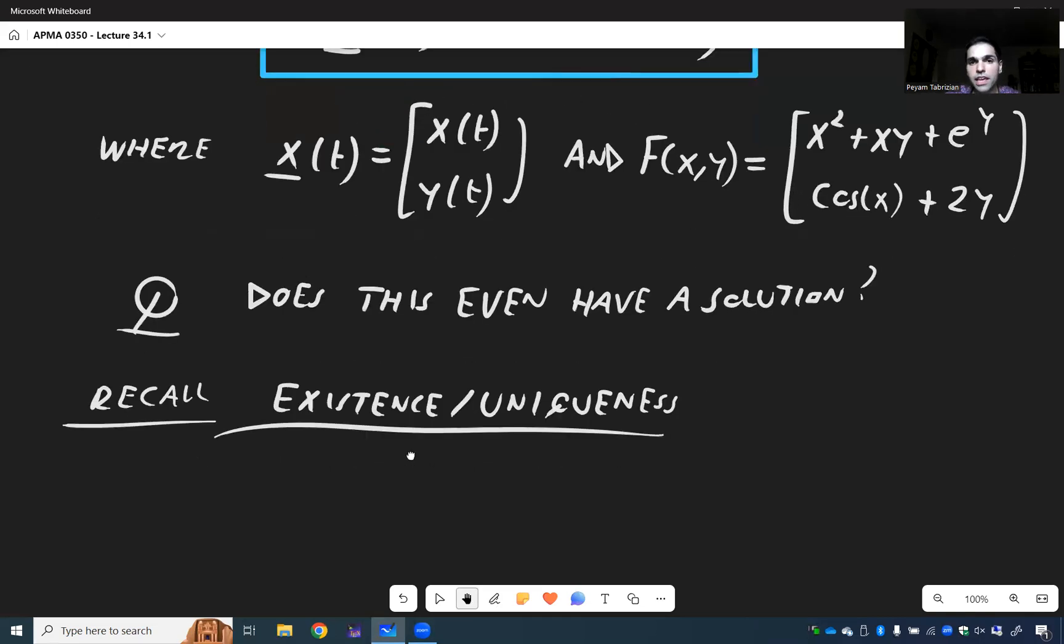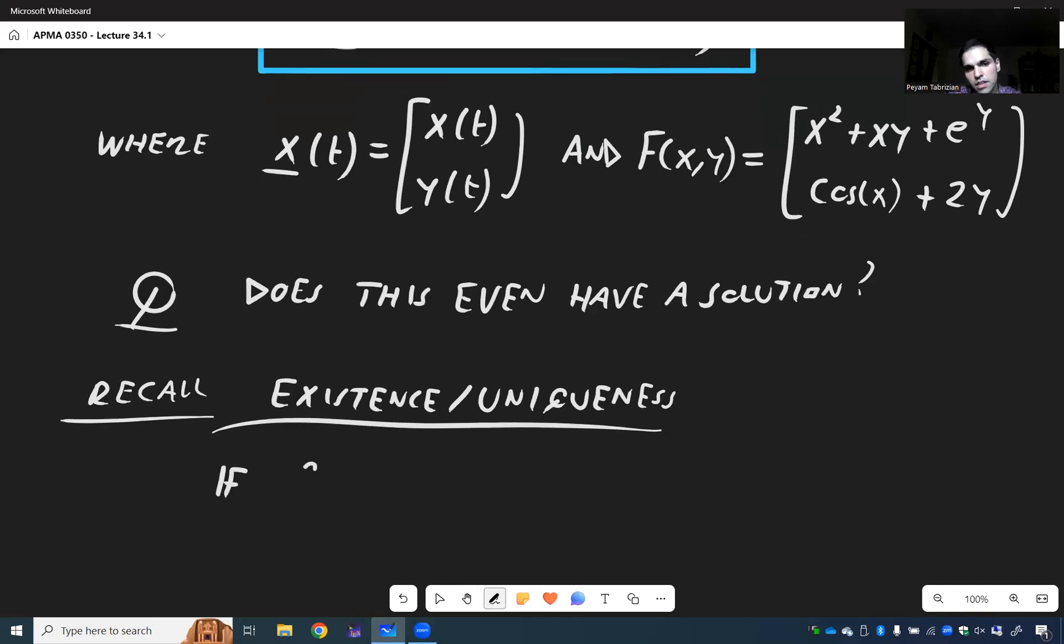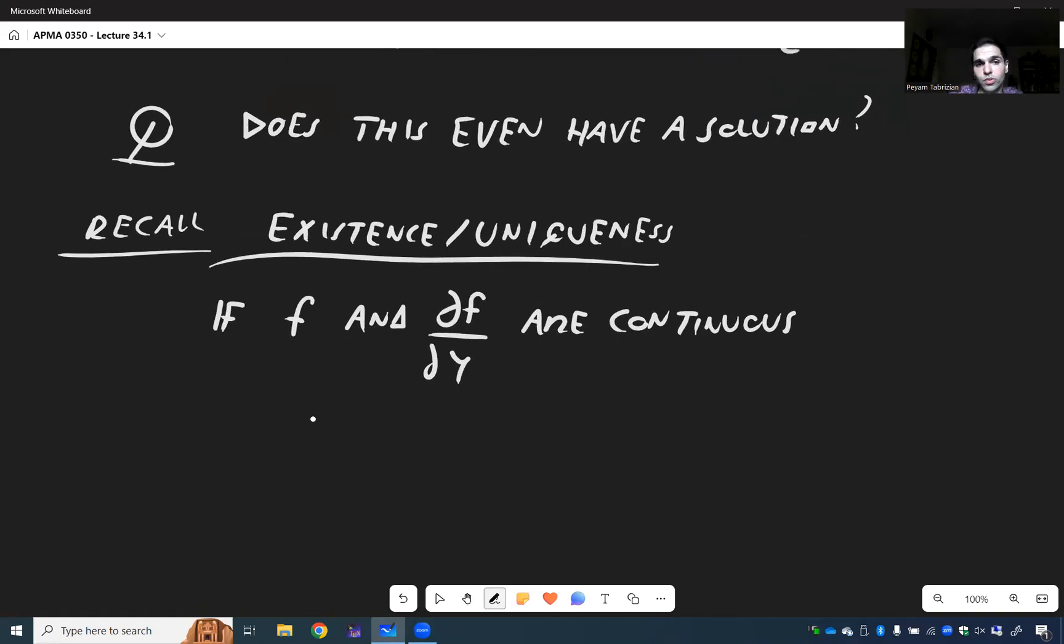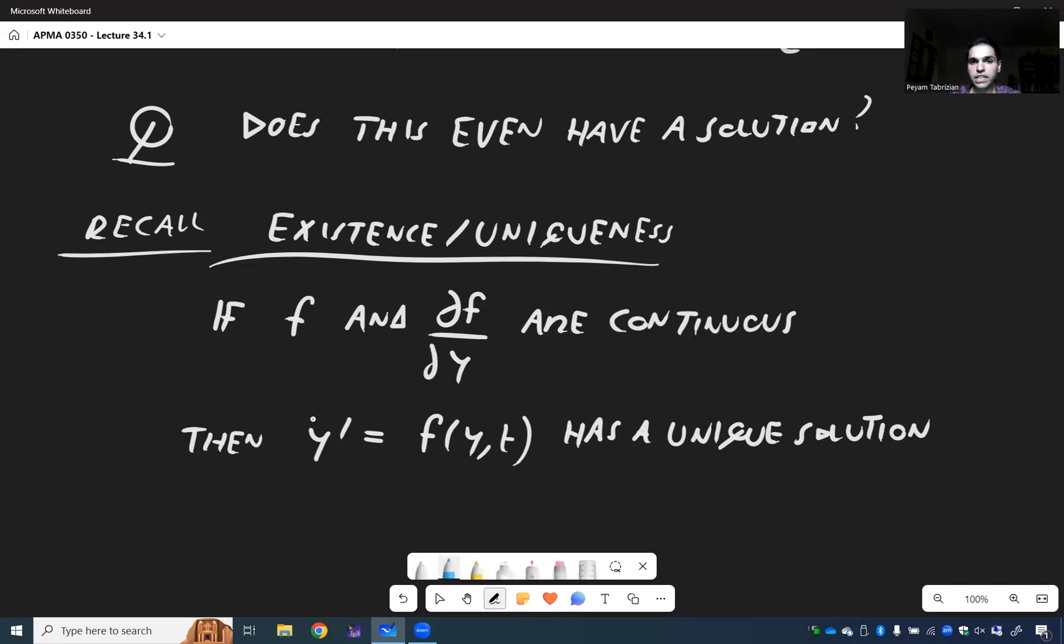Which simply says that if f and its derivative, partial f over partial y, are continuous, then our first order ODE y prime equals f of y, t has a unique solution. I know it's been a while, but remember there was a very easy criterion for checking if we have a unique solution. And it turns out the same thing is true here, except we need to replace this derivative by what's called a gradient.